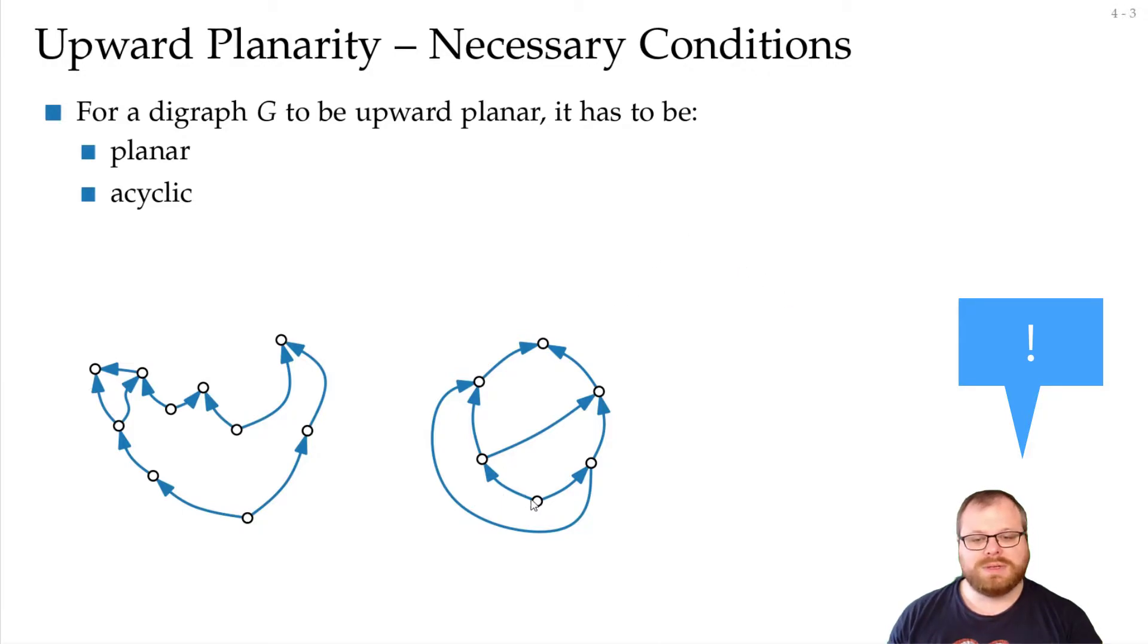For example, if we look at this cycle here, if the edges would be directed like this, this, this and this, then at some point you have to go down again to close the cycle. And this is, of course, not possible.